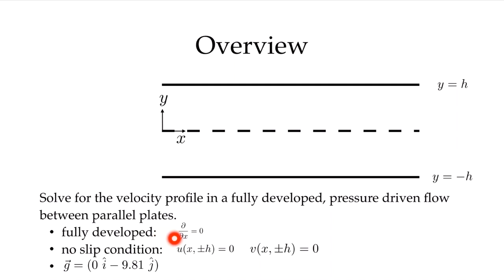We want to solve the velocity profile in fully developed pressure-driven flow between parallel plates. Fully developed means that the derivatives of the velocity components in the x direction are equal to zero — that is, any velocity profile in the channel is not changing as we move in the x direction. We have the no-slip condition, meaning the fluid velocity at the wall equals the wall velocity. These are stationary walls, so the velocity at plus or minus h is zero for both u and v components. We'll also allow for body forces, giving the acceleration due to gravity in the minus j direction.